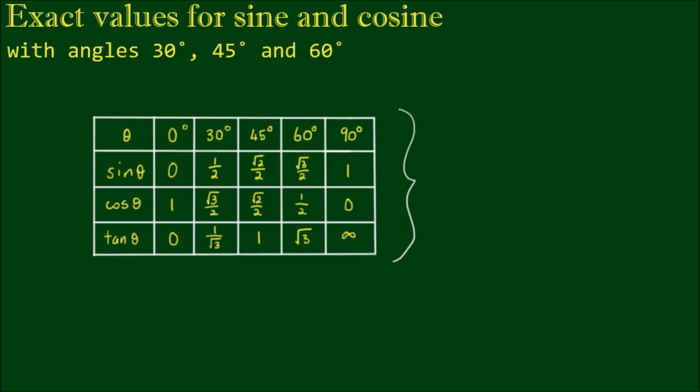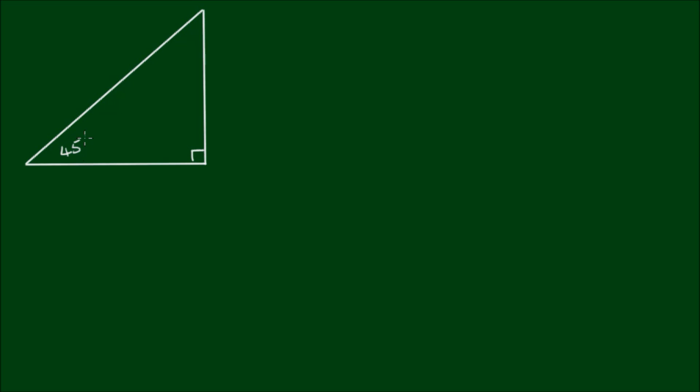Let's start with the angle of 45 degrees. To do that, I'm going to construct a triangle with two angles of 45 degrees and one angle of 90 degrees. So here we have a right-angle triangle with the two acute angles being 45 degrees each. From your primary school geometry, you should know that this is an isosceles triangle. An isosceles triangle with two equal angles will also have two sides that are equal to each other. So the two shorter sides — let's give them a length of 1.